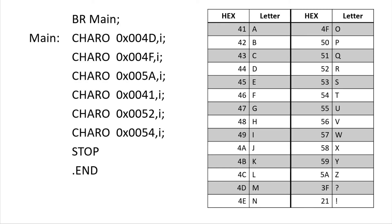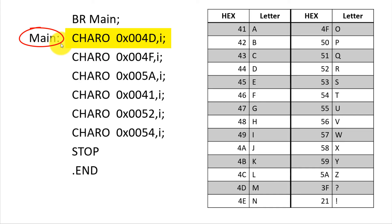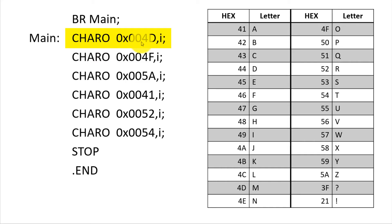Let's now try to trace a program written in assembler. The first instruction is .br main, which means we need to branch to the main memory address. Main is a tag given to this memory address, so we would branch to this instruction. The next instruction, CHARO, tells us to output a character using immediate mode addressing. That means we need to output what's in the operand, which is 0x004d. Since we are outputting a character, we reference the operand 4d from our ASCII table, which is 'm', and print it to the screen.